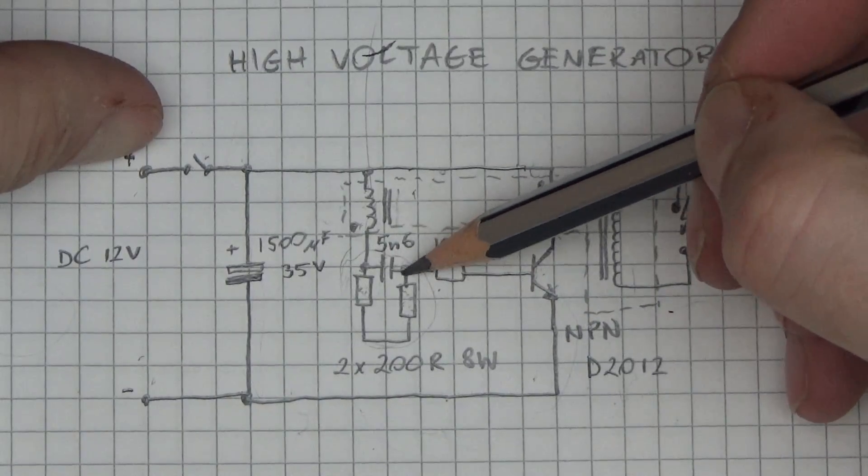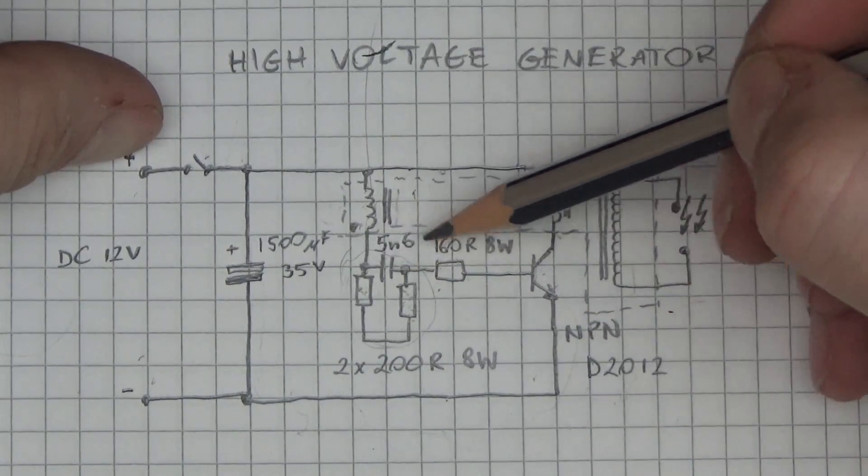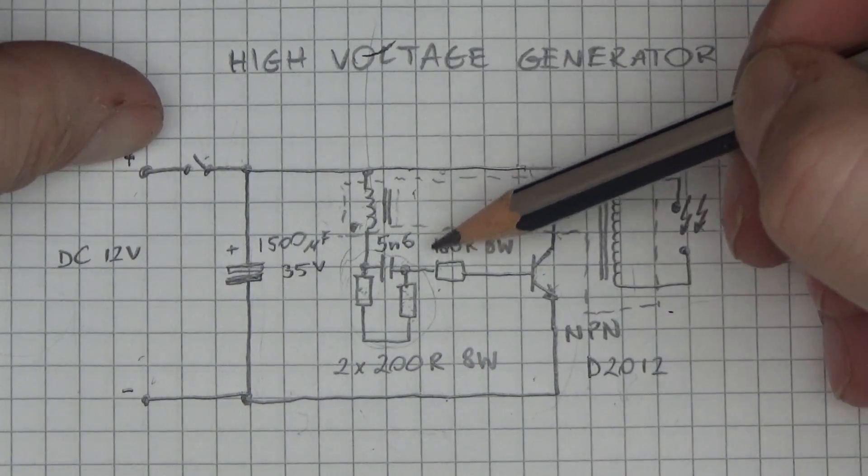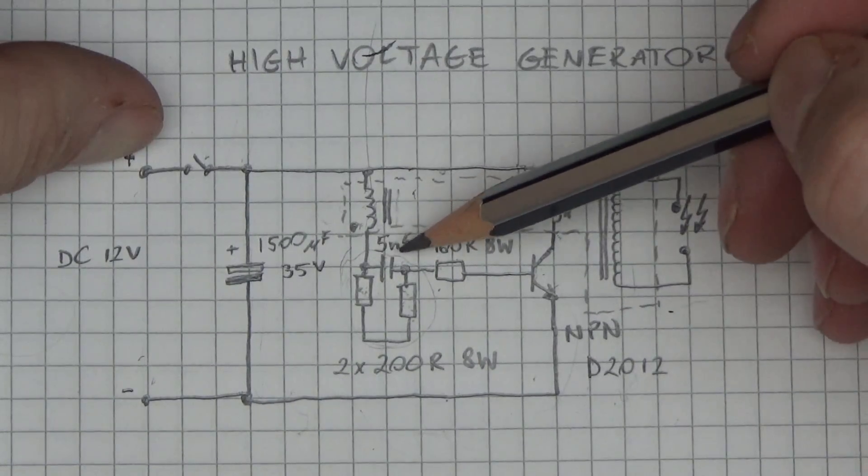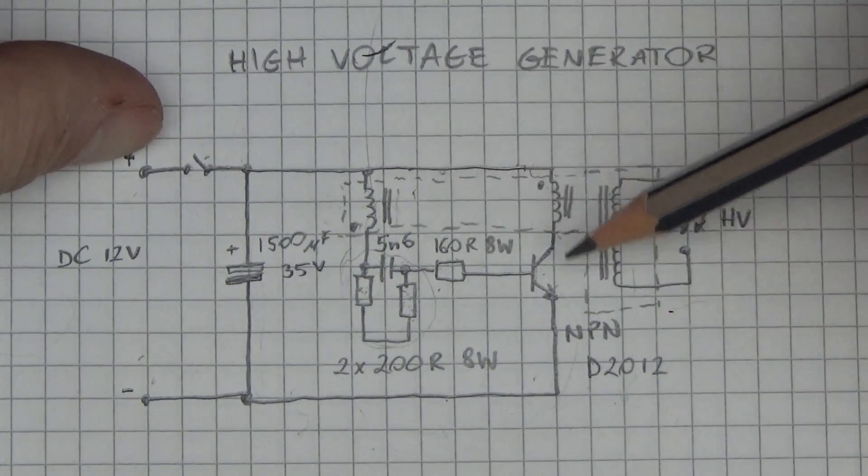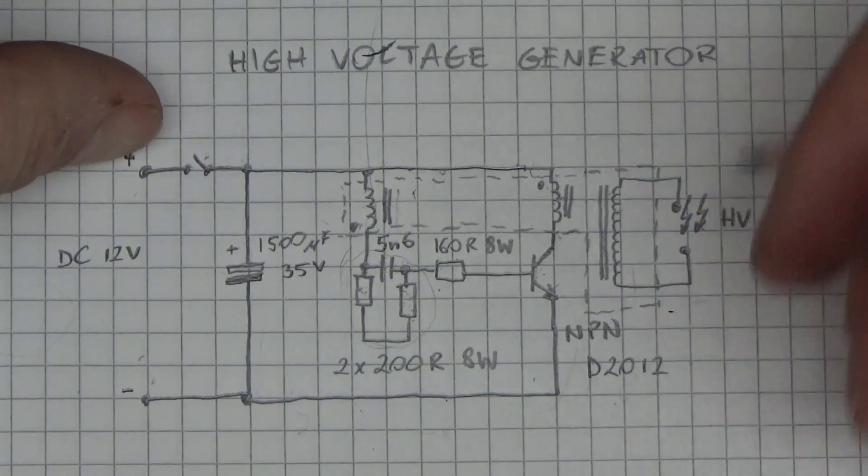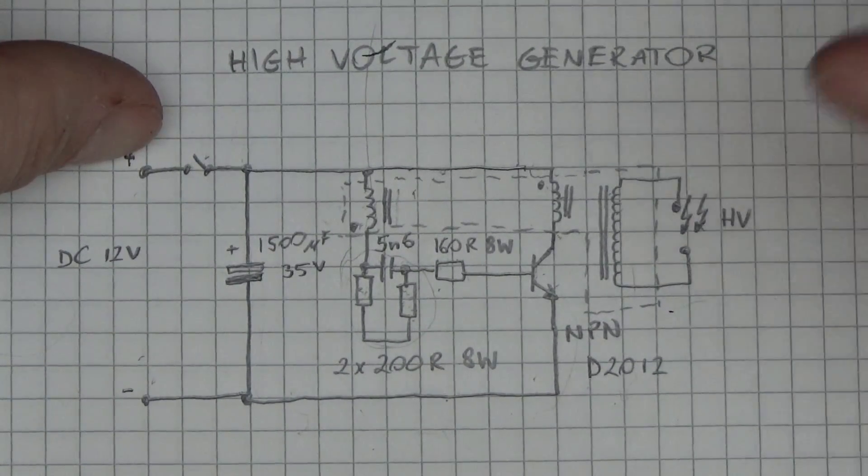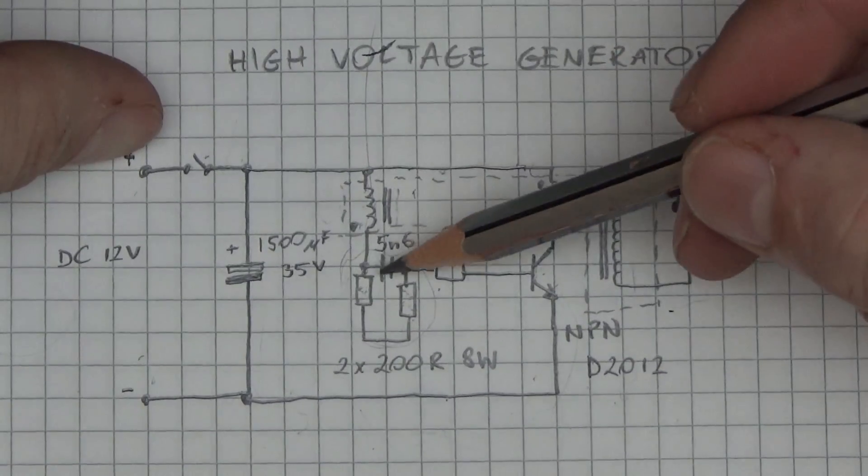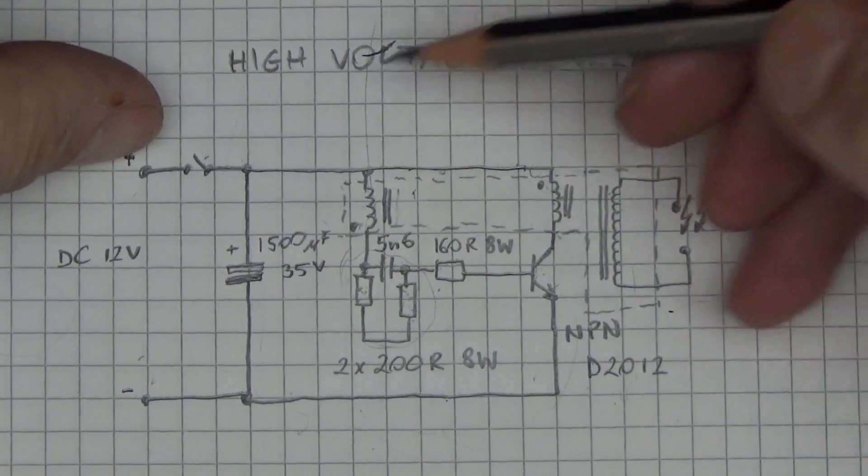But I've noticed also through experimentation that adding a small capacitor 5.6 nano was having a positive effect on the way the transistor switches. The arc was a lot more stable, was able to start by itself on a larger distance. So I left it with this capacitor in here.